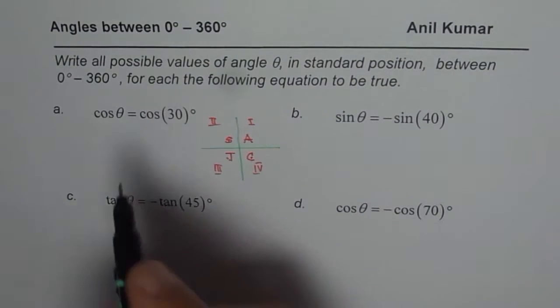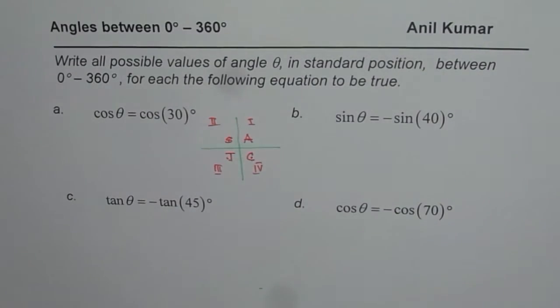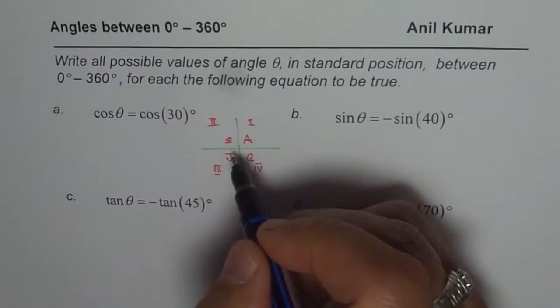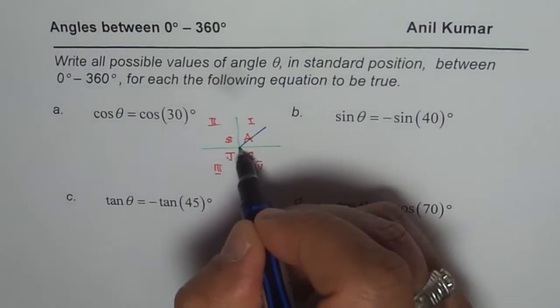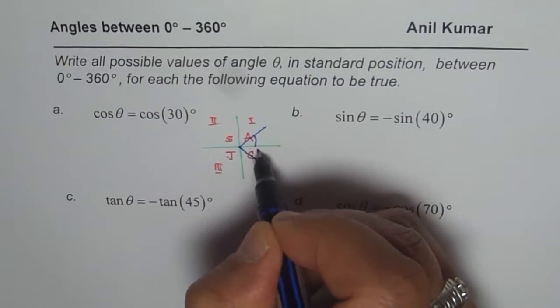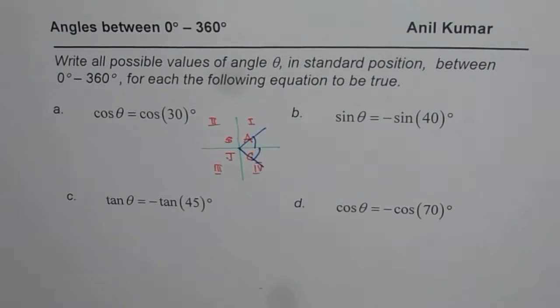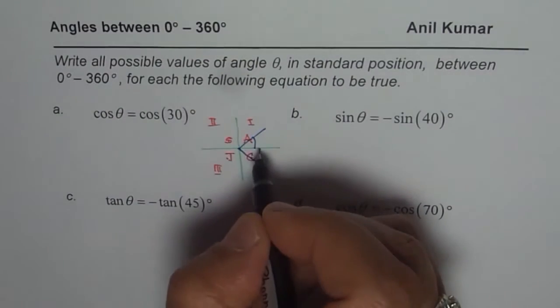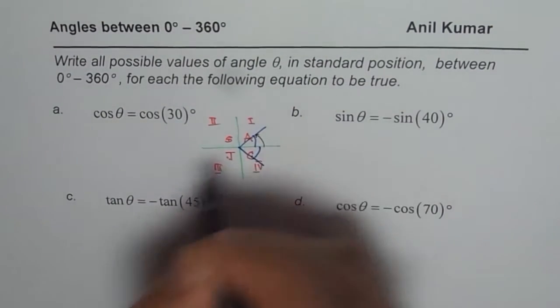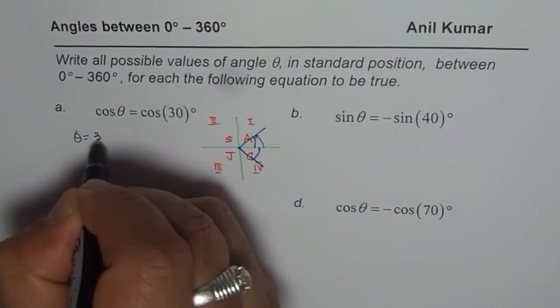So, for cosine, what are we looking for? We are looking for 30 degrees acute angle, but in quadrant 1 and in quadrant 4. So, if we are talking about 30 degrees, then principal angle is 30. So, one solution is theta equals to 30 degrees itself.